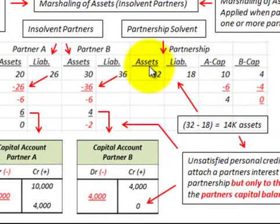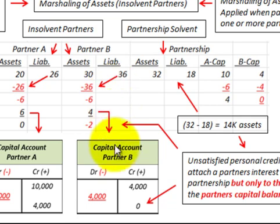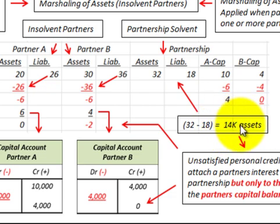The partnership has assets of $32,000 and liabilities of $18,000, leaving $14,000 in excess assets after reducing liabilities. However, the unsatisfied personal creditors could only go after Partner B's capital amount of $4,000 — that's all they could access. So partnership liabilities of $2,000 remain unsatisfied, even though the partnership was solvent with $14,000 in net assets.